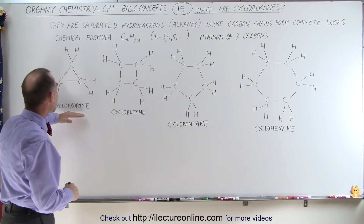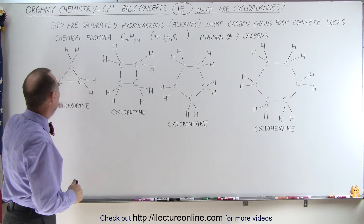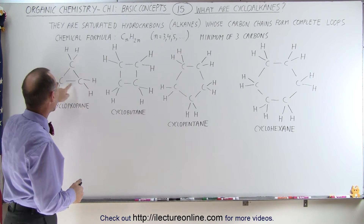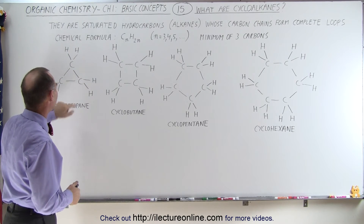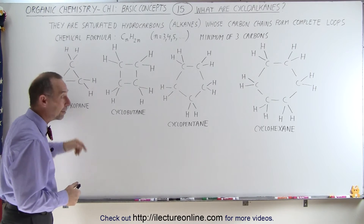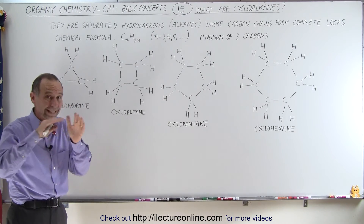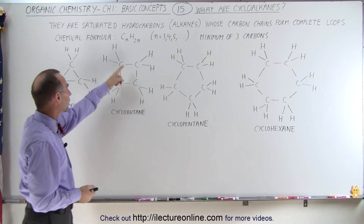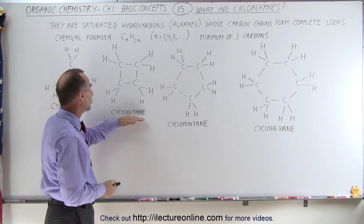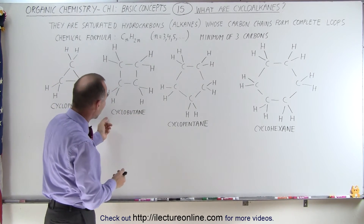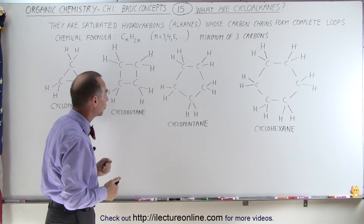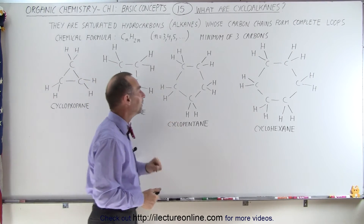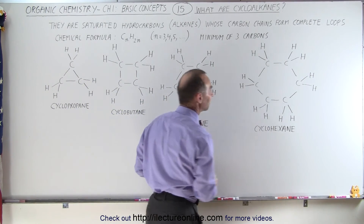The name associated with that cycloalkane is of course associated with the number of carbons it has. For three carbons, we call it propane, but since it's connected in a loop, we call it cyclopropane. With four carbons, we call it butane, but since it's connected in a loop, we call it cyclobutane. And here we have cyclopentane and cyclohexane.